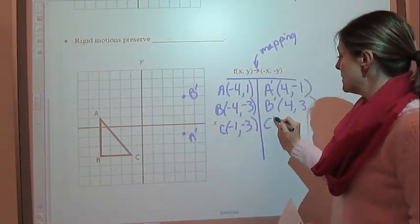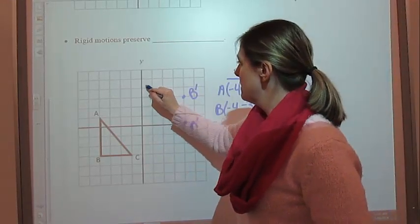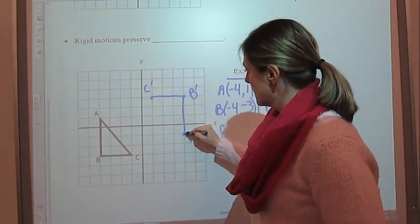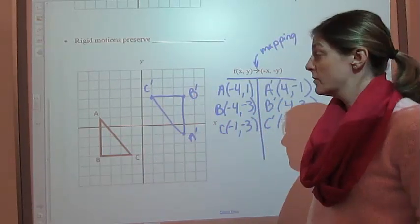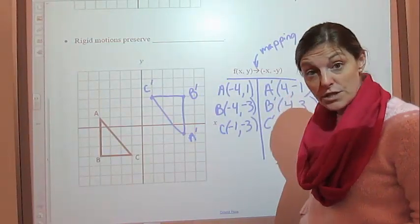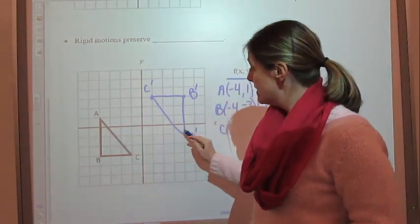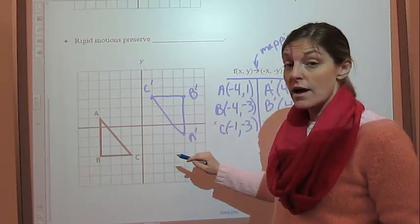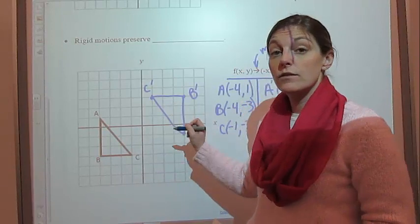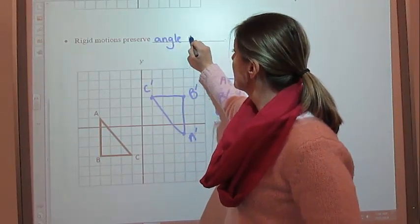And then C prime is going to be 1, 3 — so we go over 1 and up to 3. And there's your C prime. And you can connect those. Do we have the same figure just moved somehow? Yes, we do. So that's a rigid motion. And take a look at the angles — is angle A the same as angle A prime? Is angle B congruent to angle B prime? Is angle C congruent to angle C prime? Yes. So rigid motions preserve angle measures.